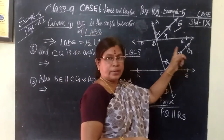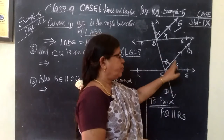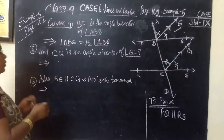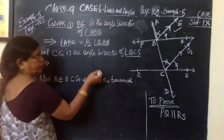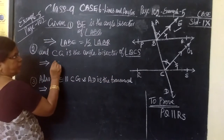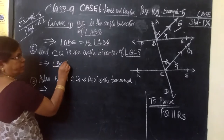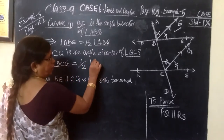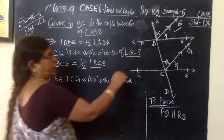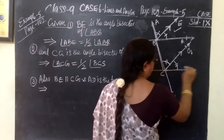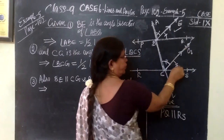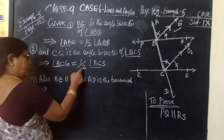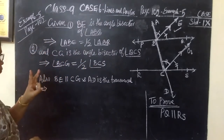It is also given that CG is the angle bisector of angle BCS, so these two parts are equal. You can write angle BCG equals half of angle BCS, since the angle bisector divides it into two equal parts.